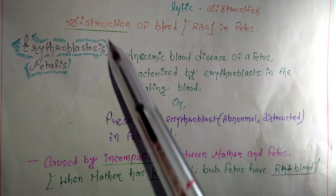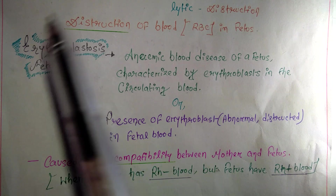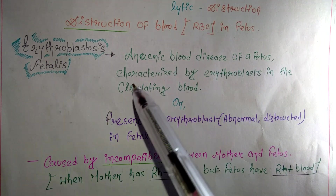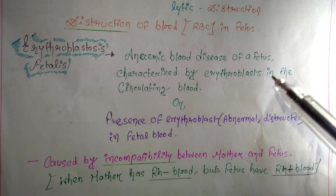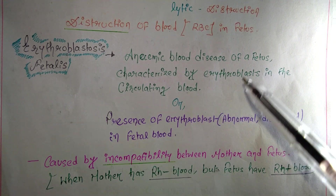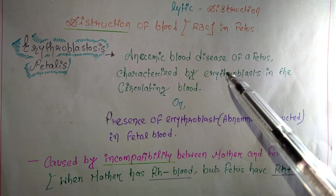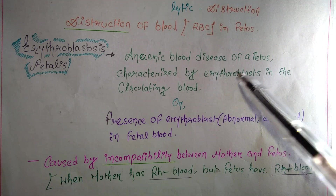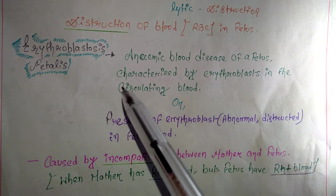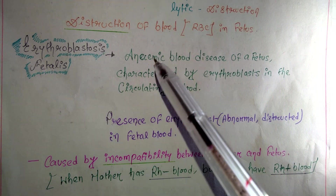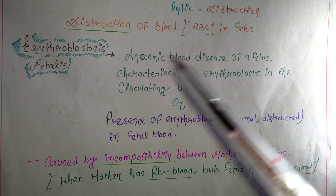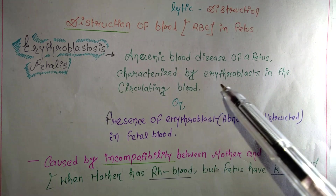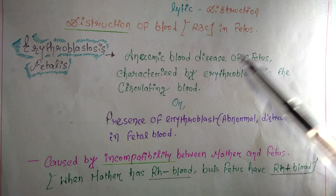Now let's understand the term erythroblastosis fetalis. It is an anemic blood disease of the fetus characterized by erythroblasts in the circulating blood. Erythroblasts here refer to abnormal RBCs present in the blood circulation of the fetus, causing anemia.